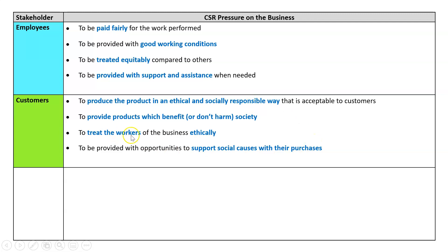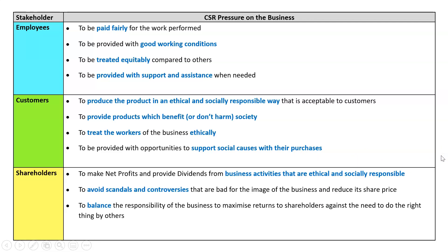Customers also want products that are made in an ethical and socially responsible way, and they want businesses to treat their workers well. They may also want to support social causes with their purchases — for example, where a business donates part of the sale to a charity. Shareholders want profits and dividends, but they want it done from business activities that are ethical and socially responsible. They want the business to avoid scandals and controversies, and to balance returns to them with the need to do the right thing by others.